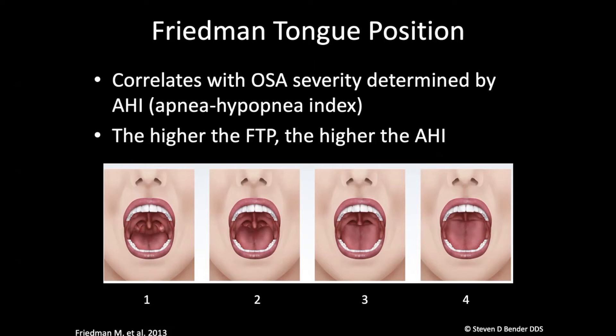If we look at number one, that would be just a wide open space — there's plenty of room for airflow, and patients understand this too if you're describing it to them. If we look at two, it's partially closed; three, it gets a little bit more closed; and four, it's completely closed. In other words, they're opening their mouth, they're not saying 'ah,' they're not sticking their tongue out, and you cannot see in the back of their throat.